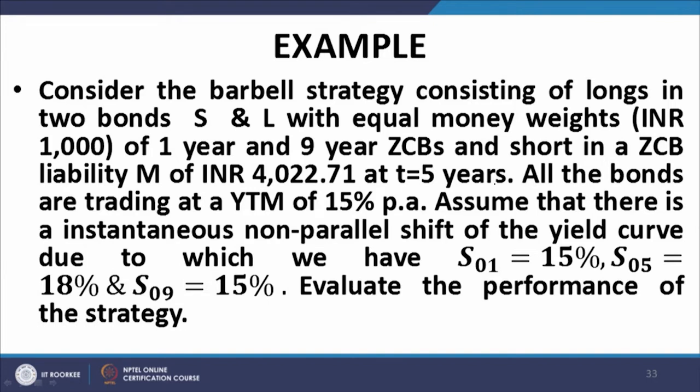The initial spot rates were 15 percent for all maturities, as indicated by the YTM of 15 percent for all the bonds. Then there is a shift in the yield curve as a consequence of which, while the short and long end rates remain unchanged, the middle rate increases from 15 percent to 18 percent.